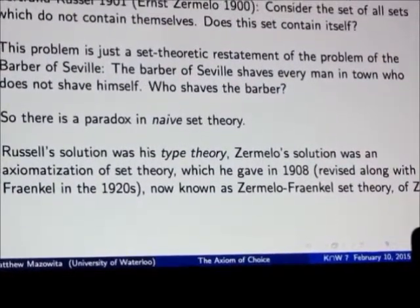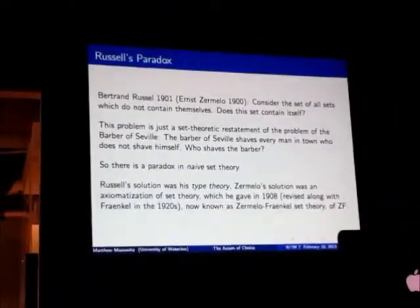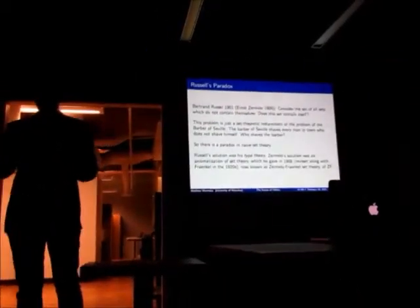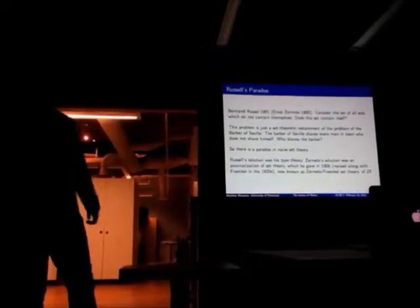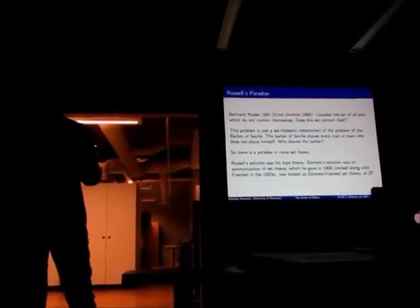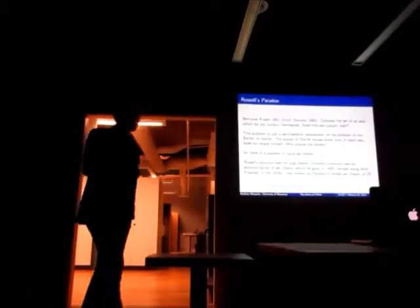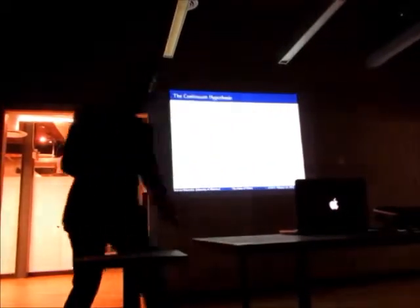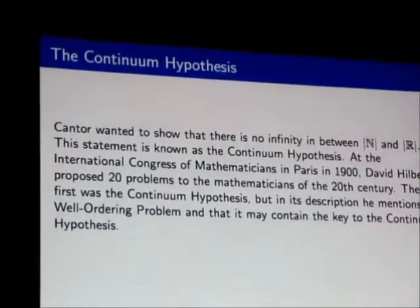Most of these axioms are pretty straightforward. They say things like, if I have one set and I have another set, there's a third set that's just those two sets put together, the union of those two sets. They're mostly fairly innocent things that you wouldn't really dispute. The funny one, before we get to choice, is maybe the axiom of infinity, which asserts the existence of an infinite set. You don't get this for free. You have to assume it.